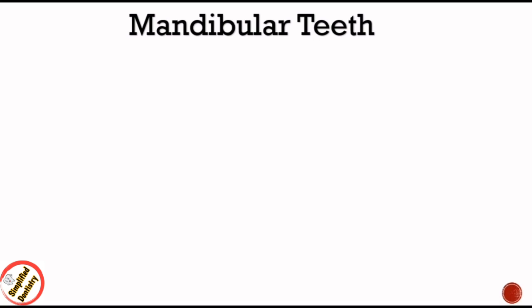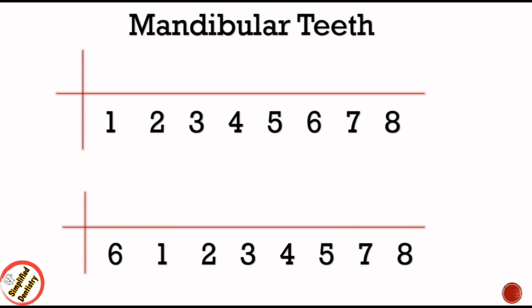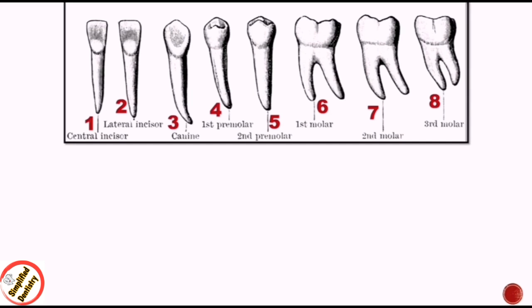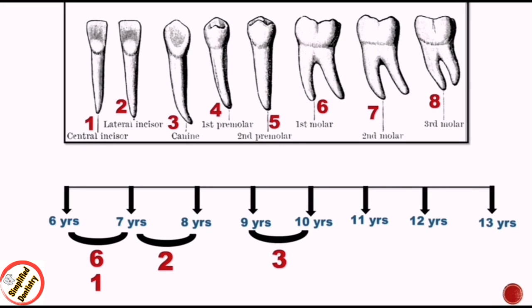Now for mandibular teeth. The eruption sequence in mandibular teeth is 6-1-2-3-4-5-7. To remember this, put 6 at first because maxillary and mandibular first molars are the first permanent teeth to erupt. Form a timeline from 6 to 13 years: 6 and 1 between 6–7 years, 2 between 7–8 years, 3 between 9–10 years, 4 between 10–12 years.